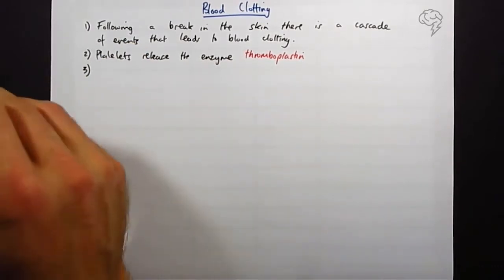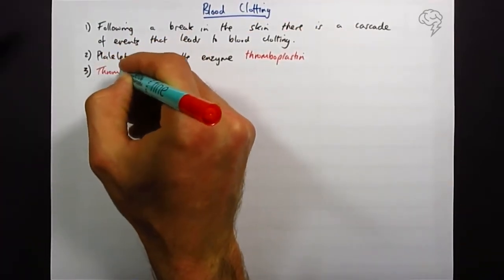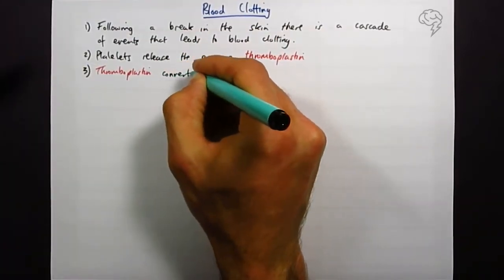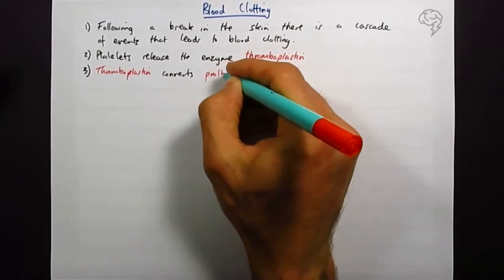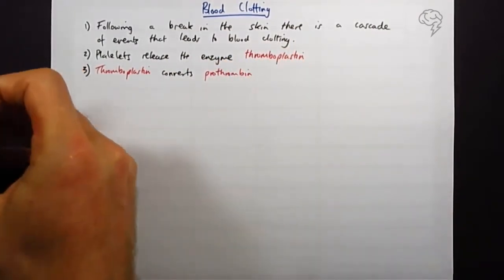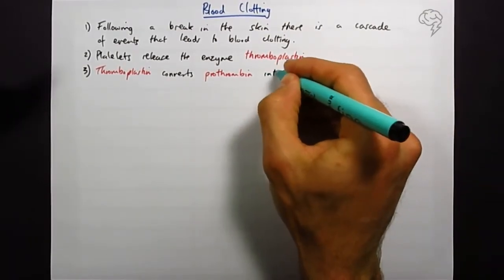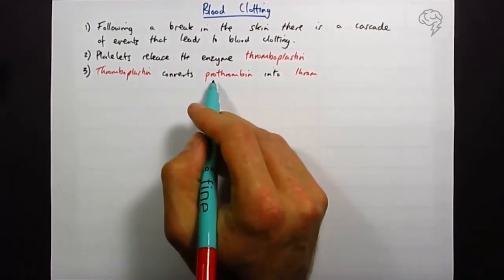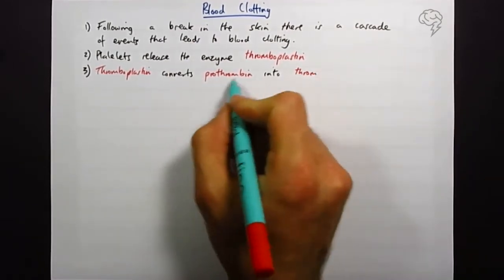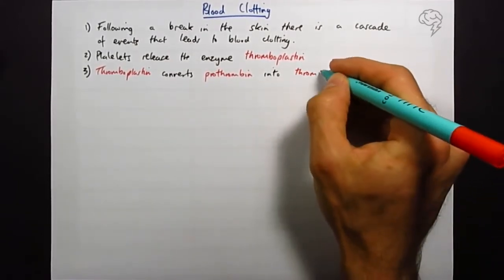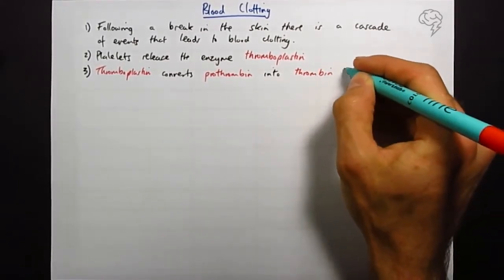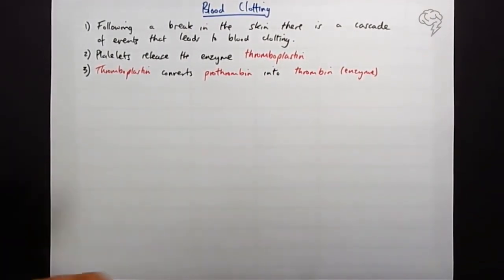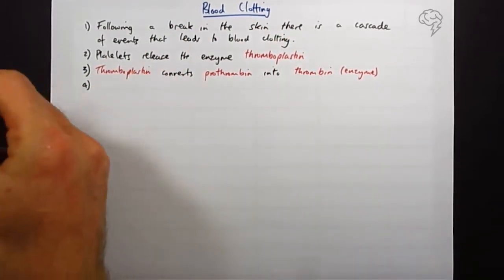So this enzyme thromboplastin converts prothrombin into thrombin. Prothrombin into thrombin - so like prototype, it means almost ready, it means precursor to. So this is the early version, like prototype, into thrombin, which is also an enzyme. So the thrombins, the TH ones, are both enzymes. In fact, I think you get a mark for saying that so I'm going to put that down.